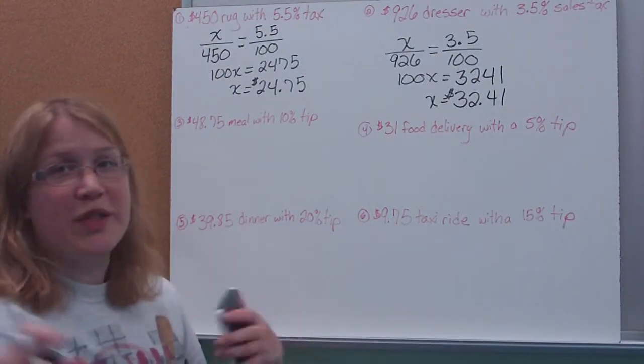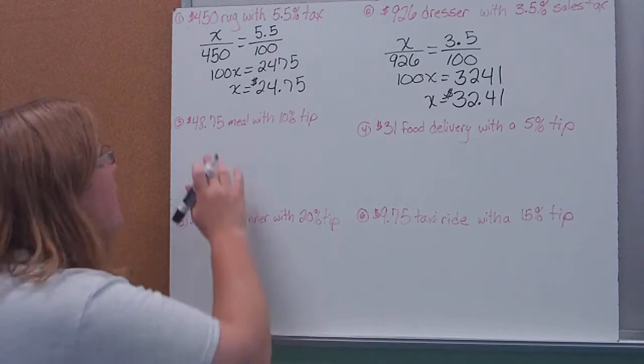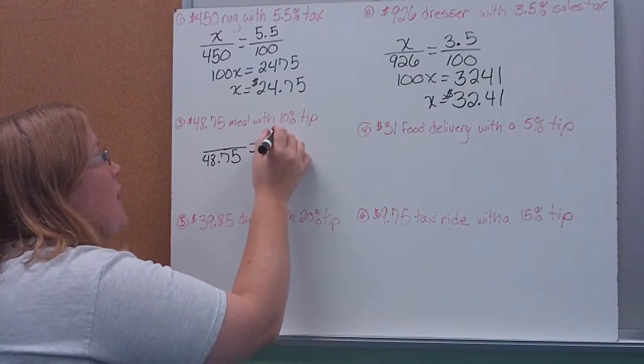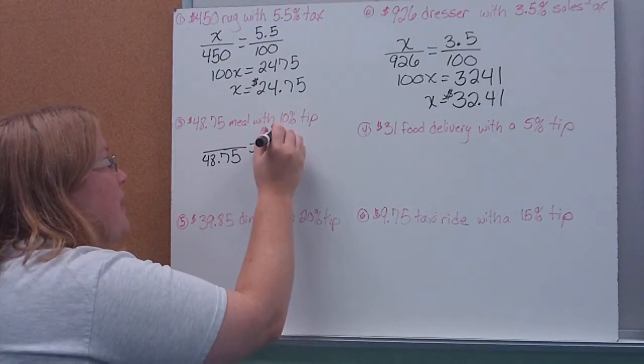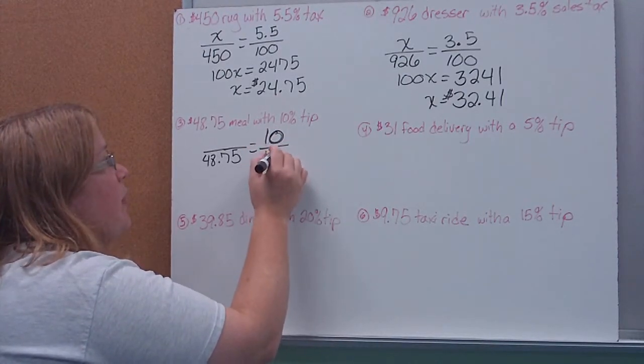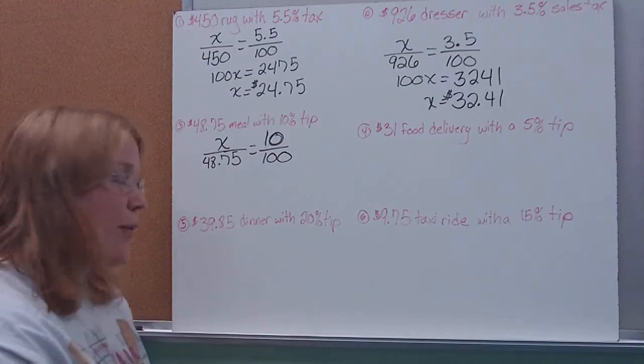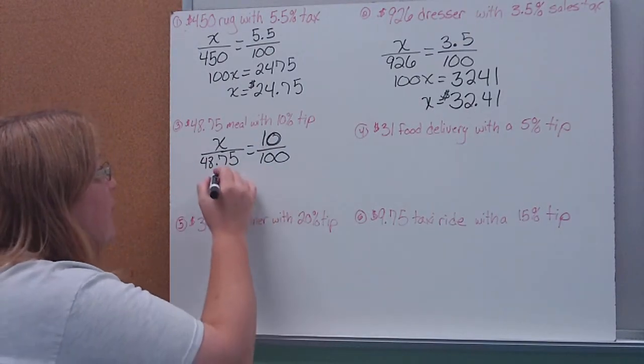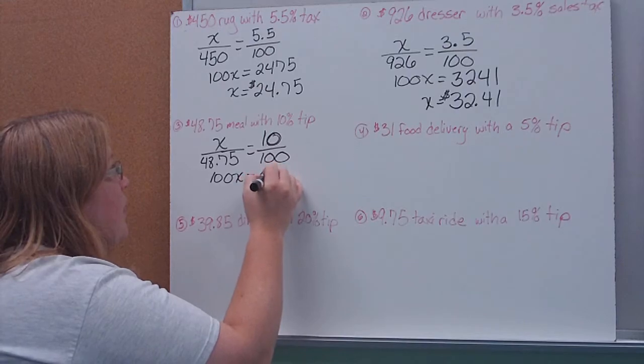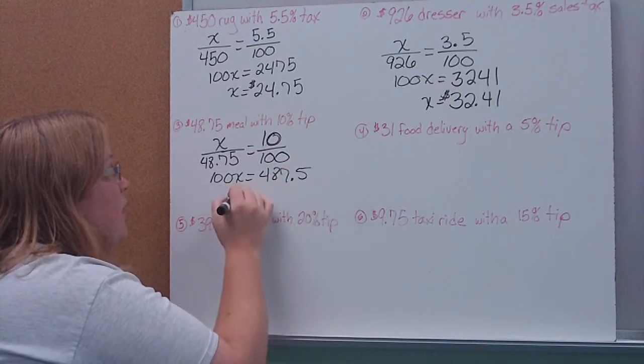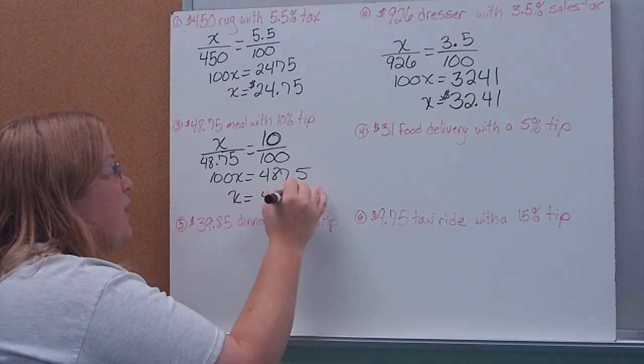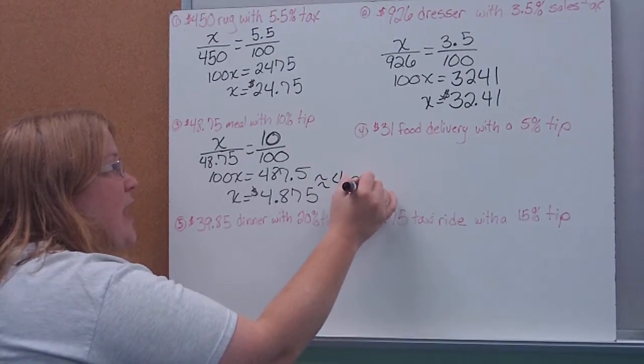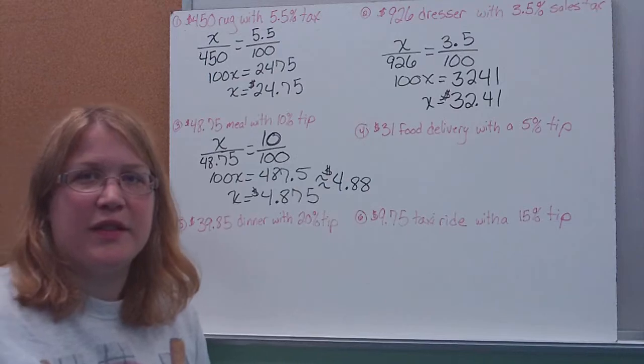The next two are dealing with tip. We're still solving them the same way. Tip goes over your cost. So my meal cost $48.75. That goes on the bottom. I'm tipping at a rate of, sorry, that was a terrible-looking 10, 10%. That was not much better. Which goes over 100. So I'm solving for how much money am I then giving in this tip. So again, cross multiply. And I find out that it is going to be approximately, I'm going to round here, $4.88 because we can't give thousands of the cents.